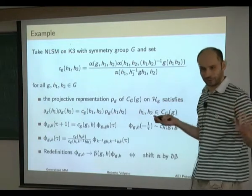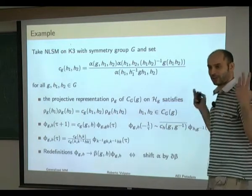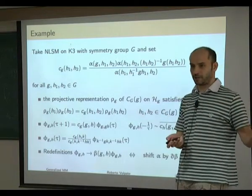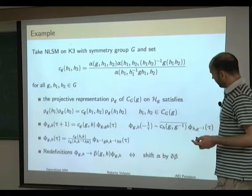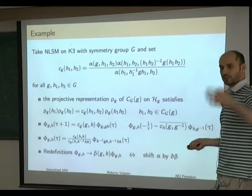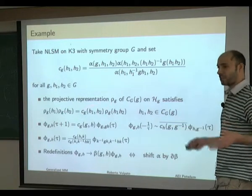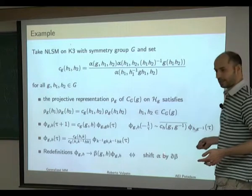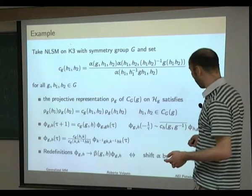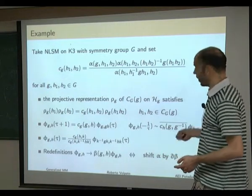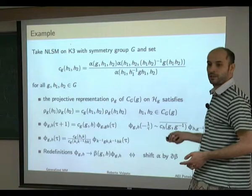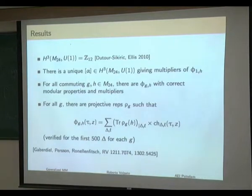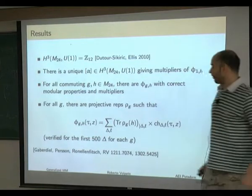What is really important and independent of all choices is the cohomology class of alpha. If the cohomology class is non-trivial, there is no way to kill all these phases. Applying this to M24: the third cohomology group of M24 is Z12, computed in 2010. They also provided a GAP routine to make computations with this cocycle.